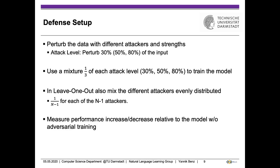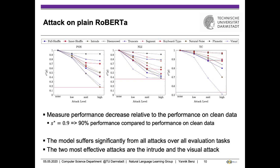These three plots demonstrate the performance decrease caused by the attacks on the unshielded RoBERTa model for the three evaluation tasks. The left plot shows POS, the middle NLI, and the right toxic comment. Performance decrease is measured in S*, representing the relative decrease compared to best performance on clean data — an S* value of 0.9 stands for 90% of clean performance. The red line represents the worst performance reachable in each task. The x-axis indicates attack level, from no perturbations on the left to the highest attack level on the right. The model suffers significantly from all attacks; the higher the attack level, the higher the performance decreases.